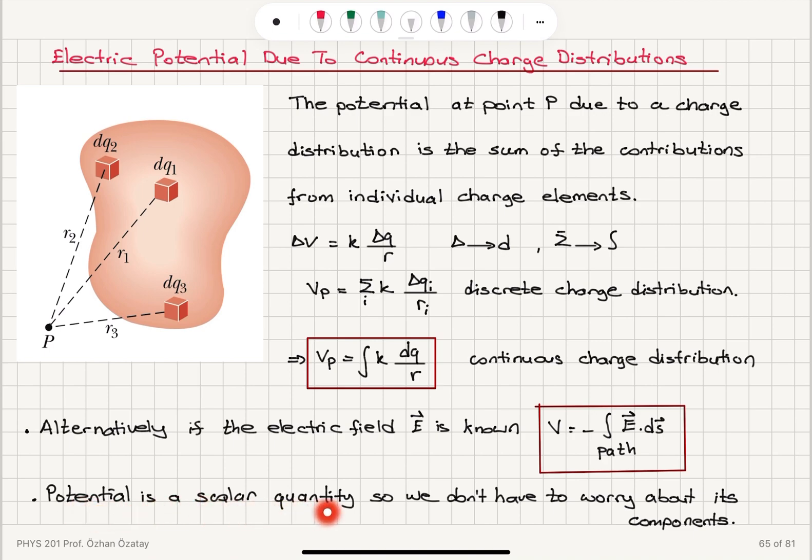Now since potential is a scalar quantity, we don't have to worry about its components. We obtain potential variation with spatial coordinates.